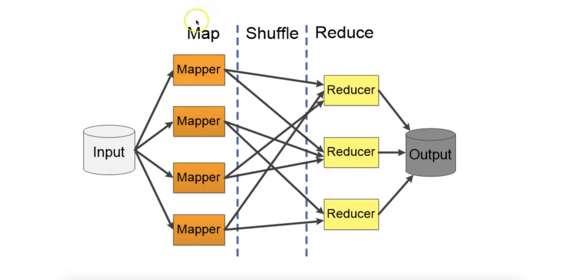In the Map phase, there is Input Splitting. The input data set, typically stored in a distributed file system like HDFS, is split into fixed-sized chunks, typically 128 megabytes or 64 megabytes in Hadoop. These chunks are sent to different nodes in the cluster. The system assigns these chunks to mappers or worker nodes, which process each chunk independently.